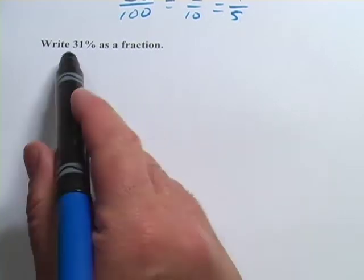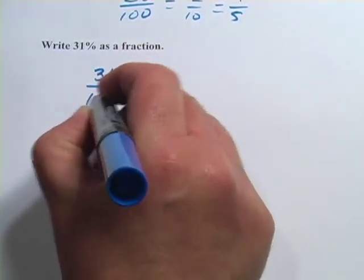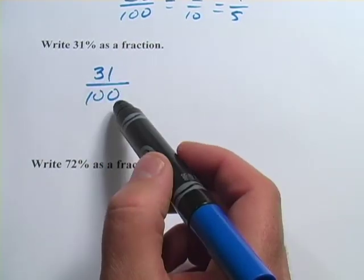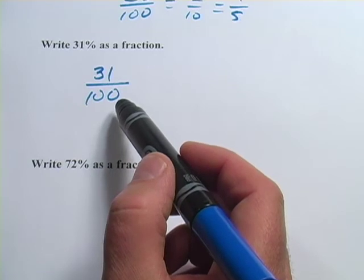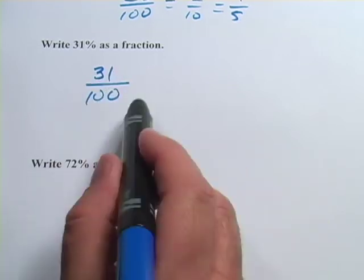Next one says write 31% as a fraction. I put 31 over 100. And in this case, I don't think there's any common factors here between 31 and 100. In fact, I think 31 is a prime number. So, that one, we can just leave as it is.